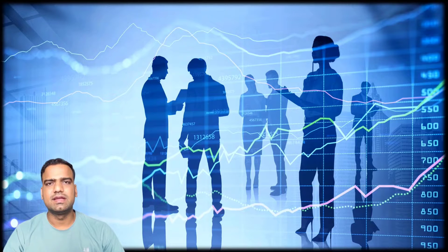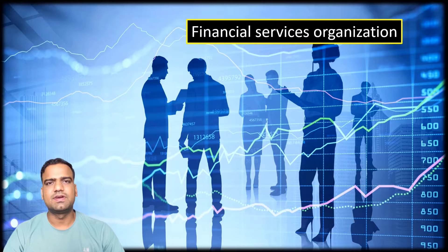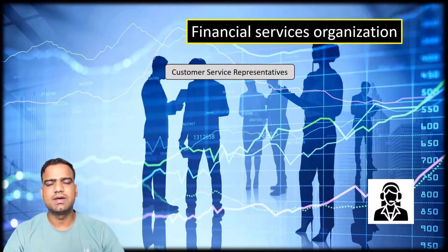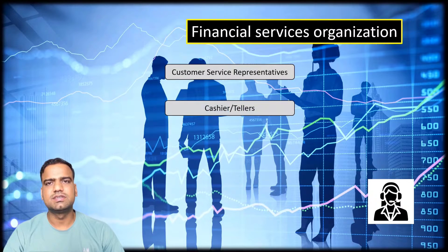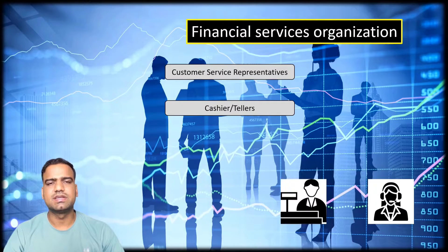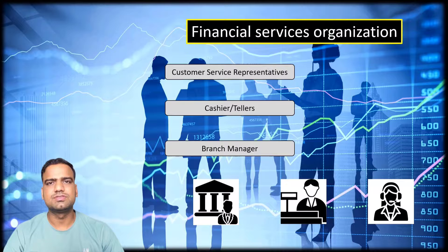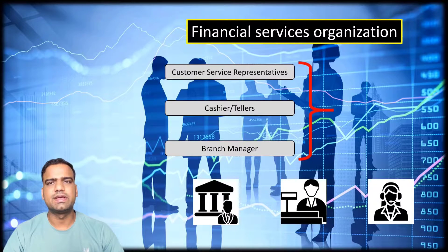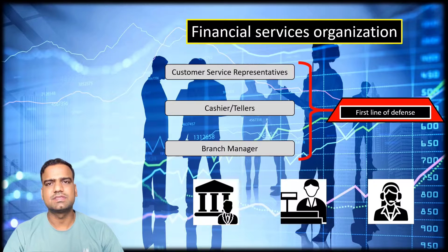For example, in a financial services organization, frontline staff in a branch are responsible for ensuring that security measures are in place. Customer service representatives do this by verifying customer identity or other authentication methods. Similarly, cashiers who handle cash deposits and withdrawals adhere to security measures like verifying signatures and confirming identity. The branch manager is responsible for overall branch operations, ensuring compliance and conducting regular staff training and awareness sessions. All staff performing day-to-day functions collectively act as the first line of defense.